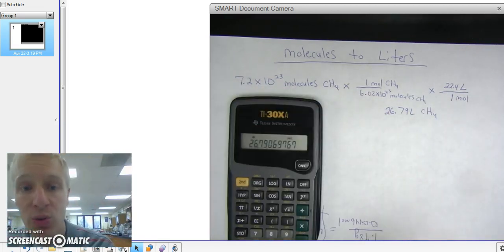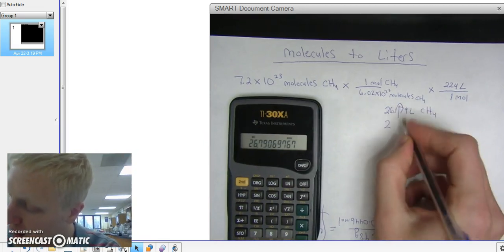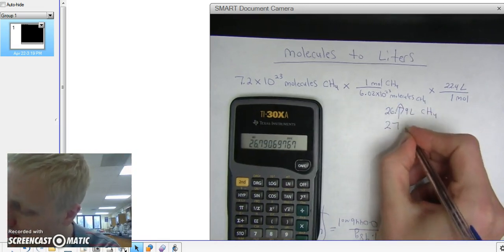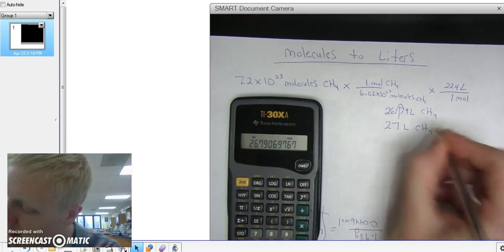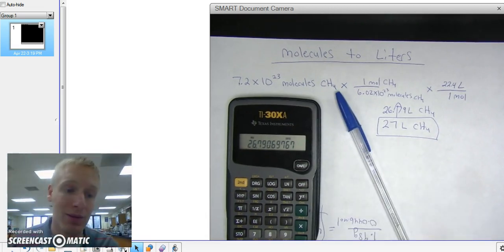Going back to our original problem, we have just 2 sig figs. So that 26 rounds up to 27 liters of CH4. And that is how you convert molecules to liters.